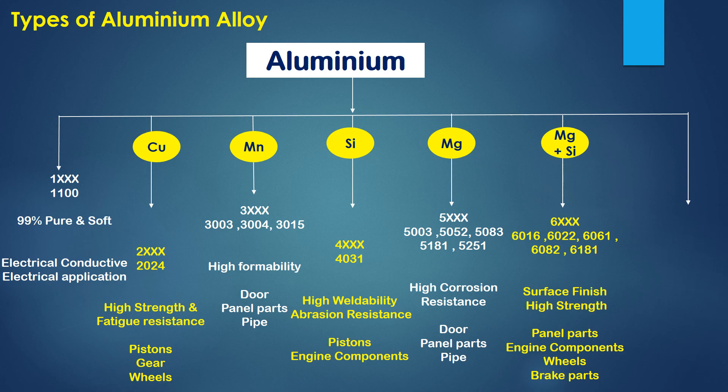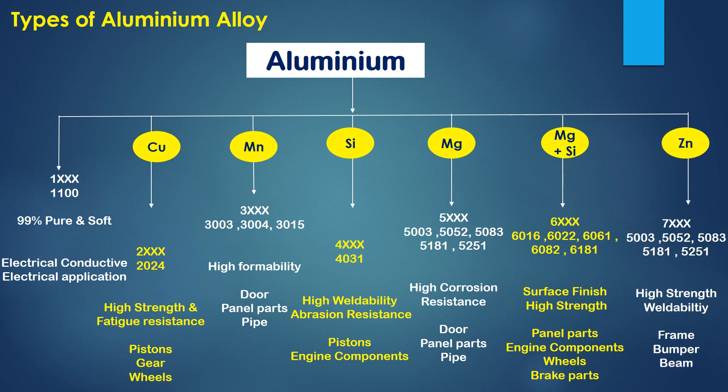The 6000 series is widely used in the automobile field. It is alloyed with manganese, magnesium, and silicon, and has good strength and good surface finish. Panel parts, doors, engine components, wheels, and brake parts are all made from this Aluminium alloy. The 7000 series is alloyed with zinc, offering high strength and weldability. Heavy structures, frames, bumpers, and beams are made from this Aluminium alloy.